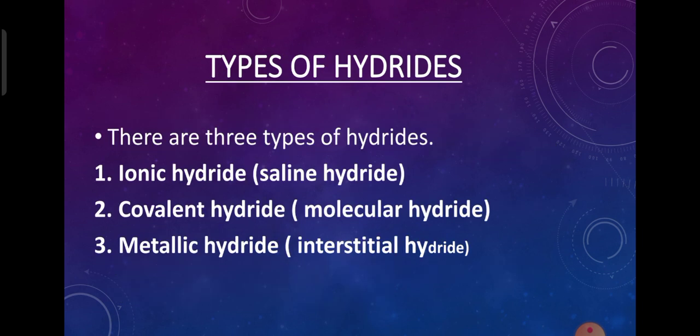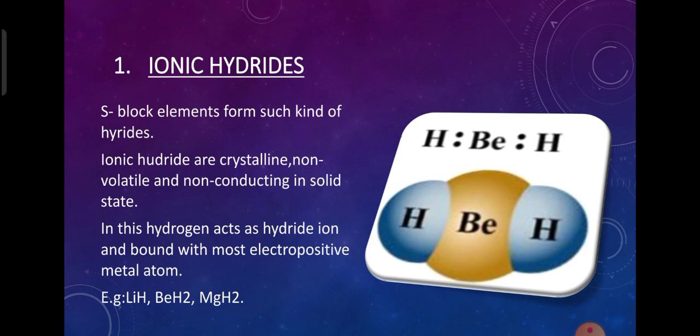Next, the types of hydrides. There are three types of hydrides depending upon the behavior and nature of the bond. The first one is ionic hydride, the second is covalent hydride, and the third is metallic hydride. Let us see them one by one. First is ionic hydride.